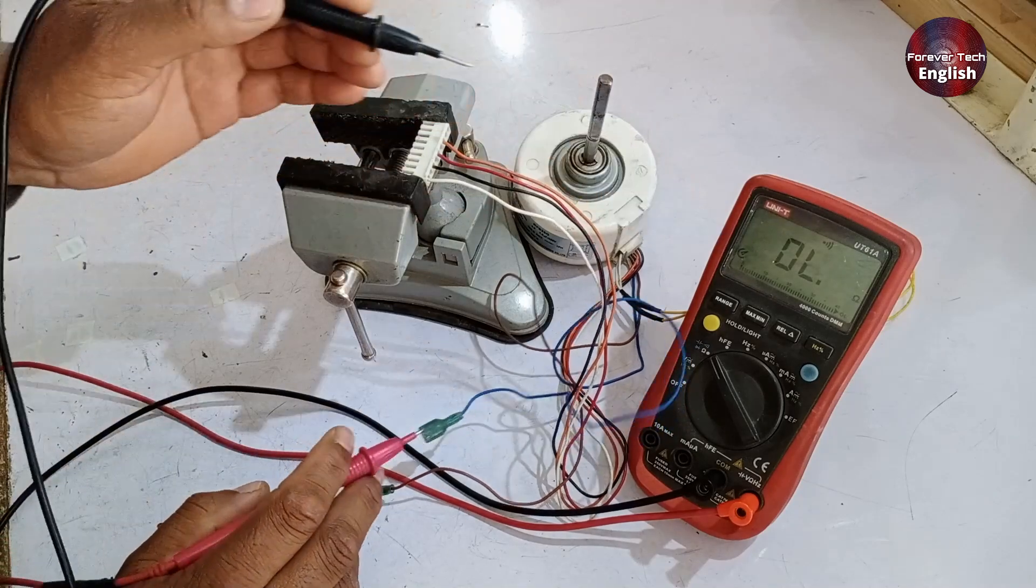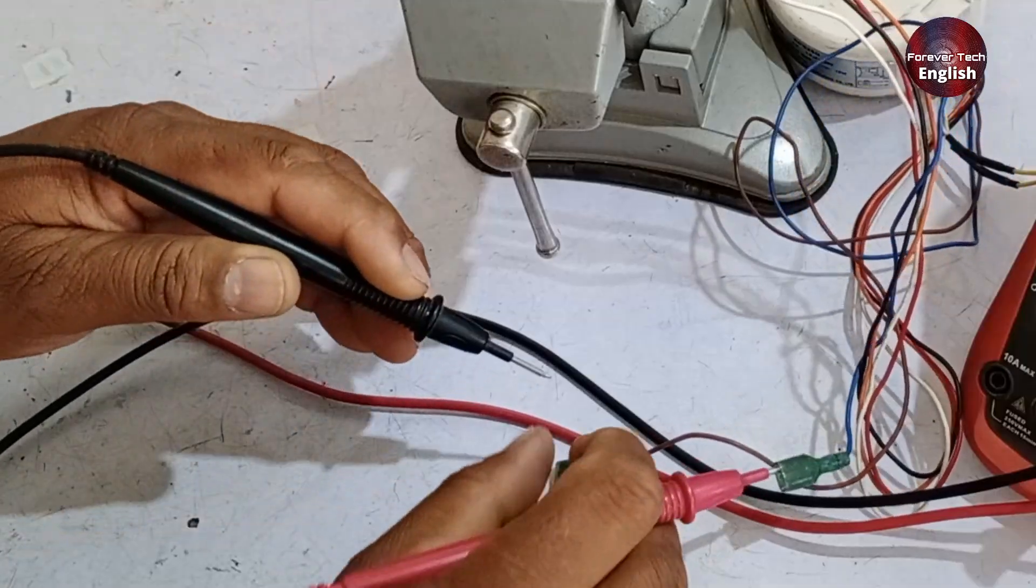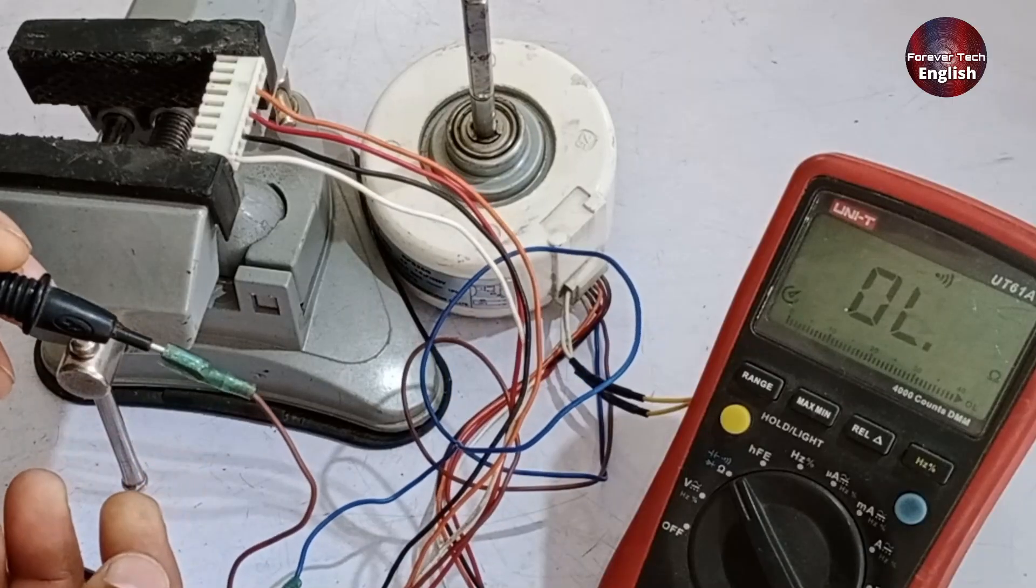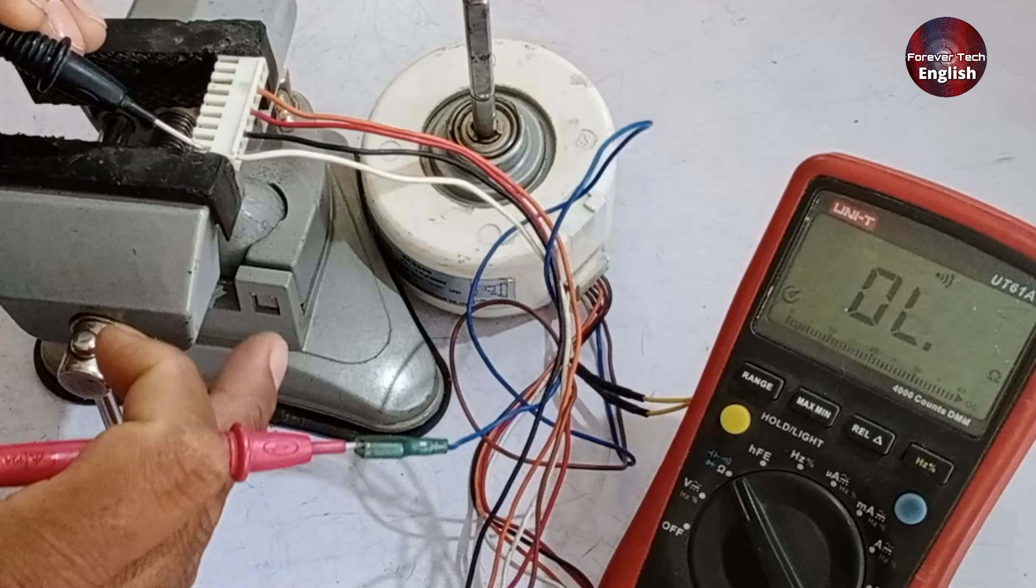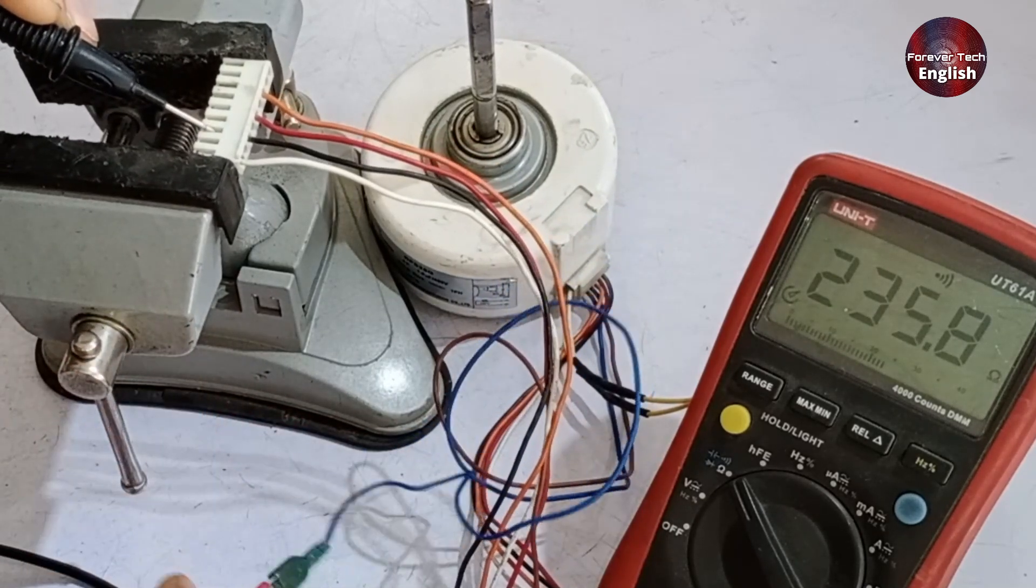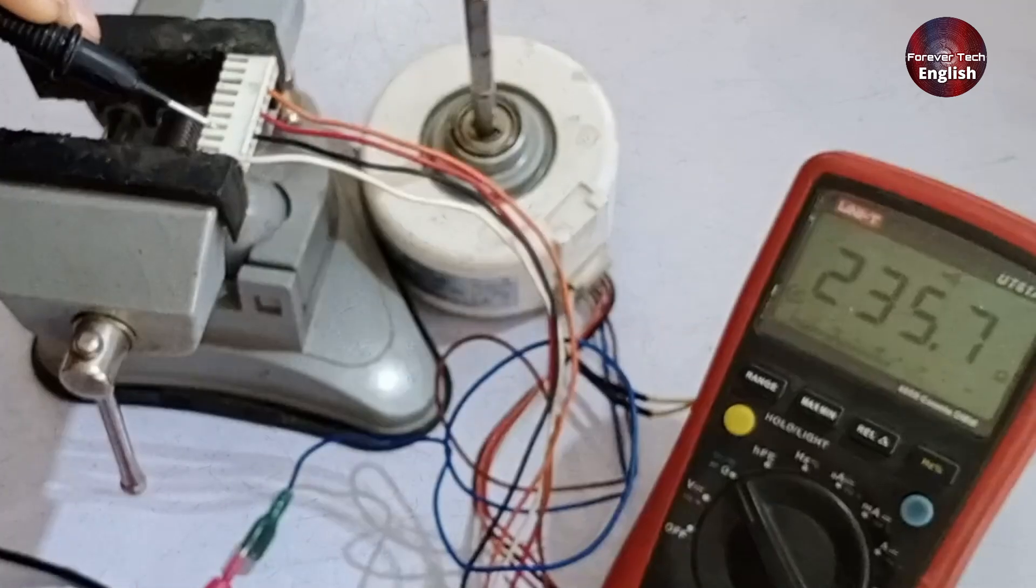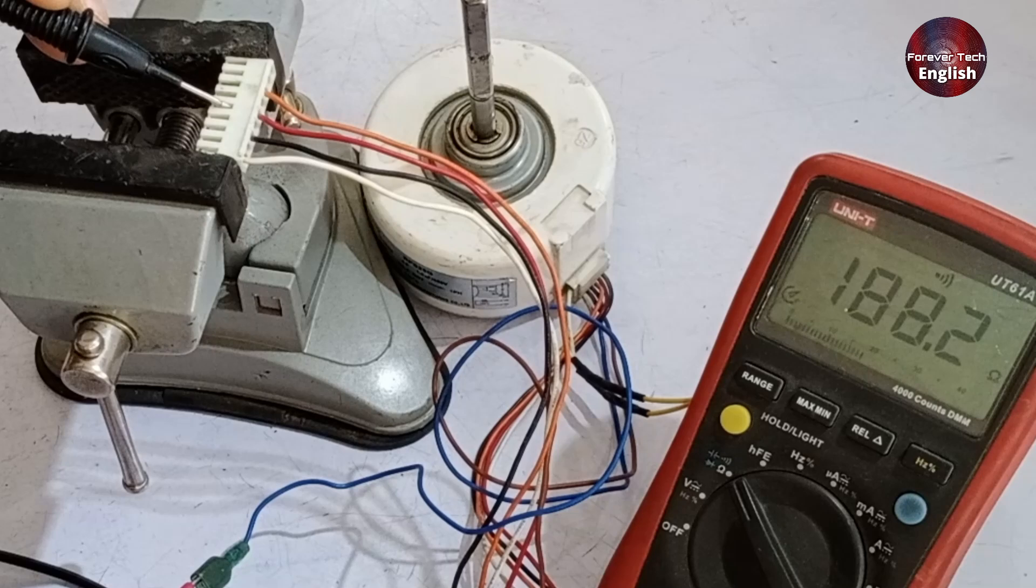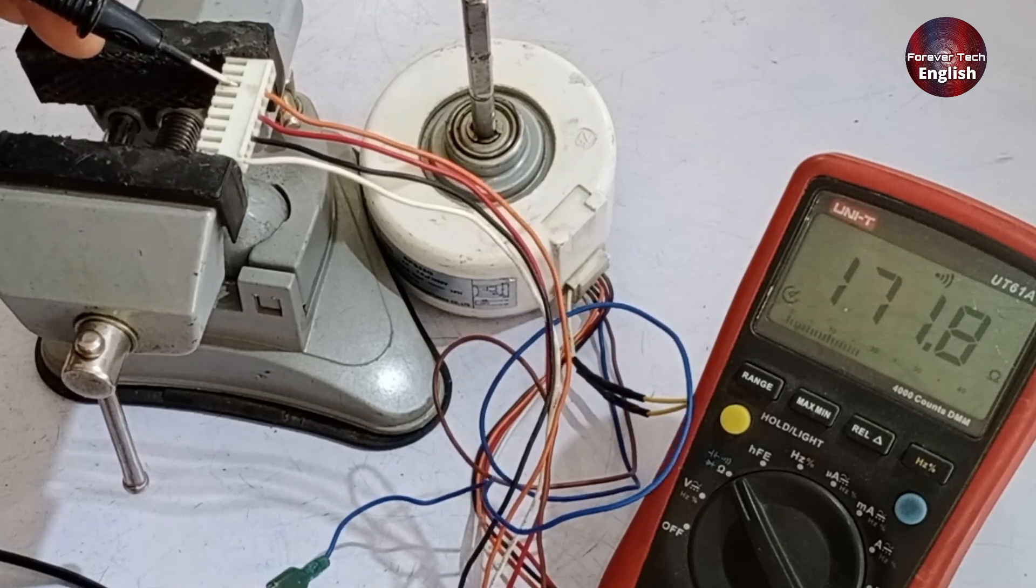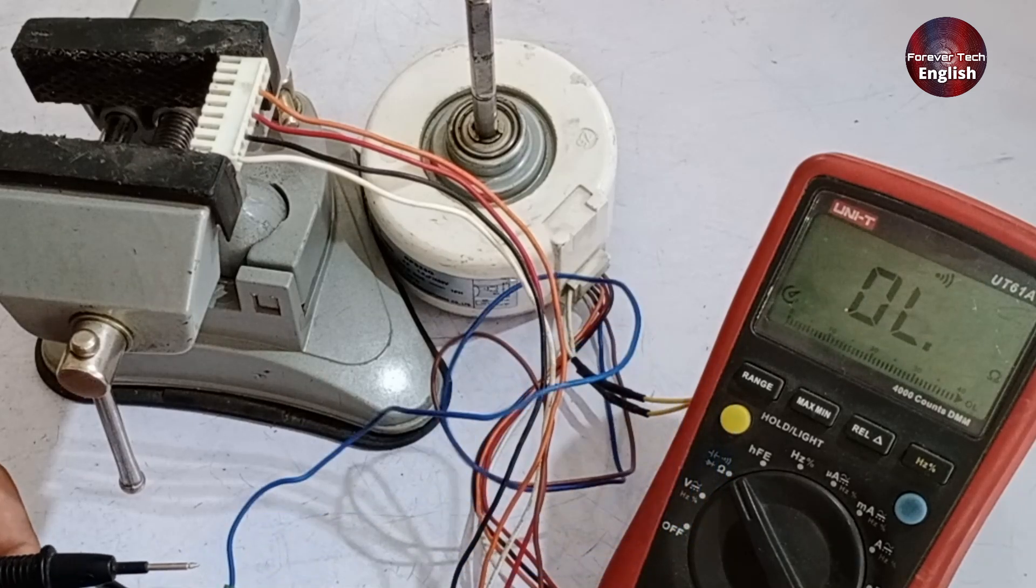I have connected the red probe to the blue wire, and now I will check the other probe with all the wires. First, I will check this wire, and there's no beep sound coming from it. Even with this connection, there is no sound. However, the resistance value is showing here, which is 235 ohms, but no beep sound is coming along with it. The next wire also shows resistance, and the next one too. None of the wires have made a beep sound. This means the beep sound will be present on some other wires.